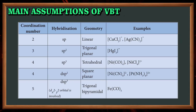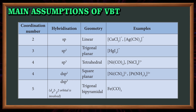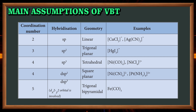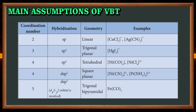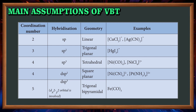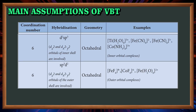Looking at the hybridization table: coordination number 2 uses sp hybridization (s orbital 1, p orbital 1) giving linear geometry — examples include copper chloride and silver cyanide. Coordination number 3 uses sp2 hybridization giving trigonal planar geometry. Coordination number 4 has two different geometries: sp3 hybridization gives tetrahedral geometry, and dsp2 hybridization gives square planar geometry. Coordination number 5 uses dsp3 hybridization giving trigonal bipyramidal geometry.